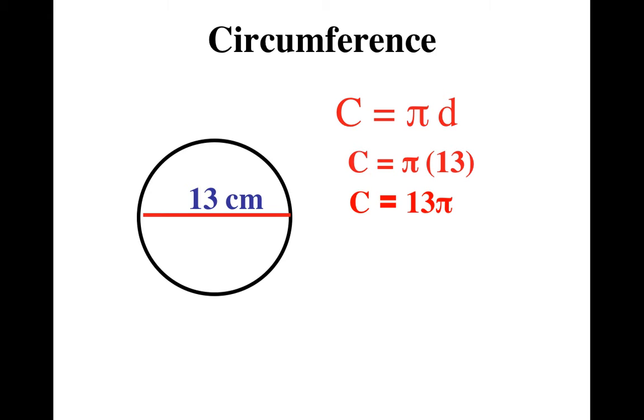But if you wanted to have a number that it's about, all you have to do is plug in 3.14 for pi, multiply, and you would get 40.82 centimeters, is what the circumference is about.